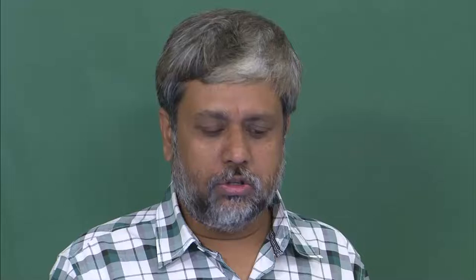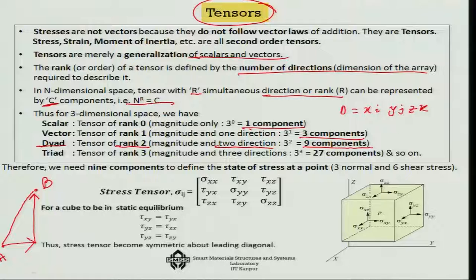When we talk about stress, it is a tensor of rank 2, also known as a diad. That means you need a magnitude as well as two directions every time — it is 3 squared, or in other words, nine components are needed to define the stress at a point. That is why a very simple generalization of stress as force per unit area does not really make sense, because we need to specify which area we are talking about.